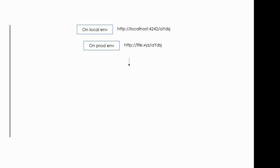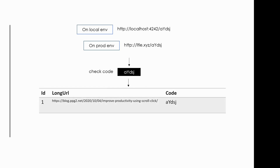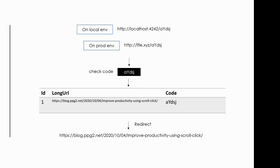Now let's see how our web app will work when a user tries to open a web page using a short URL. The user will paste the short URL in the browser, so the request will come to our web app where we can get the appended code, which can then be checked in the database. If a match is found, we can redirect the user request to the original long URL. In this simple way, our web app will work.